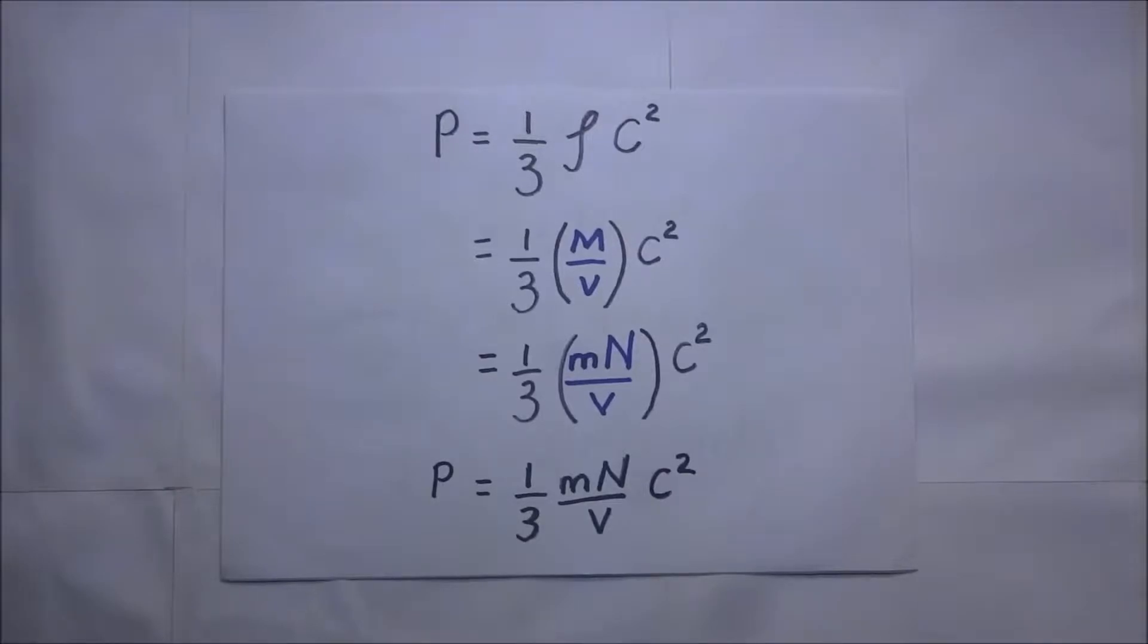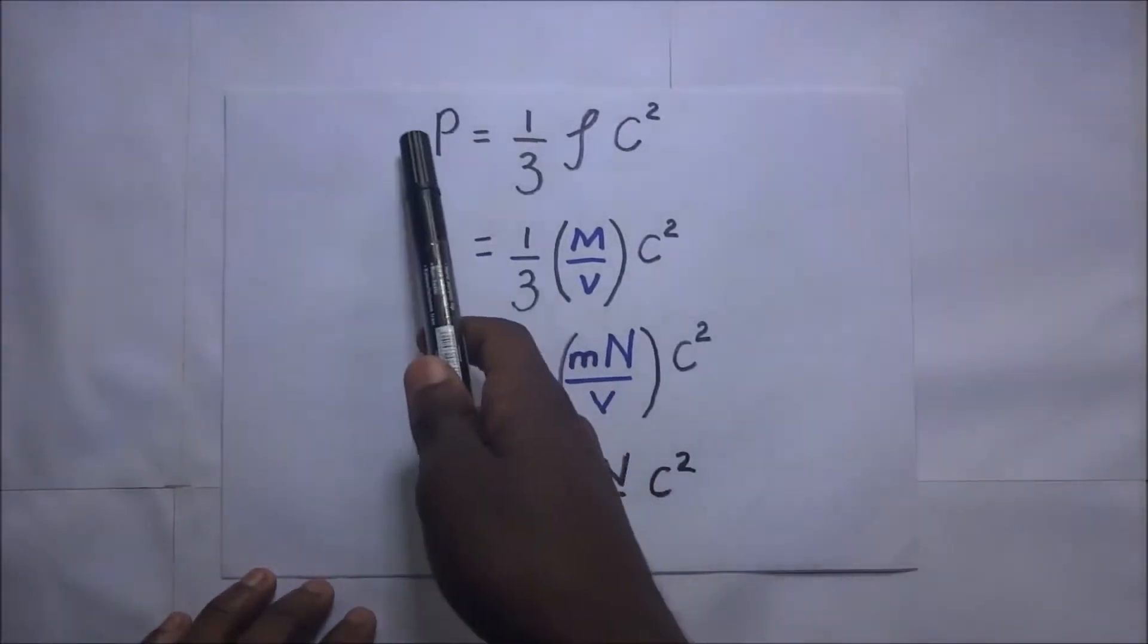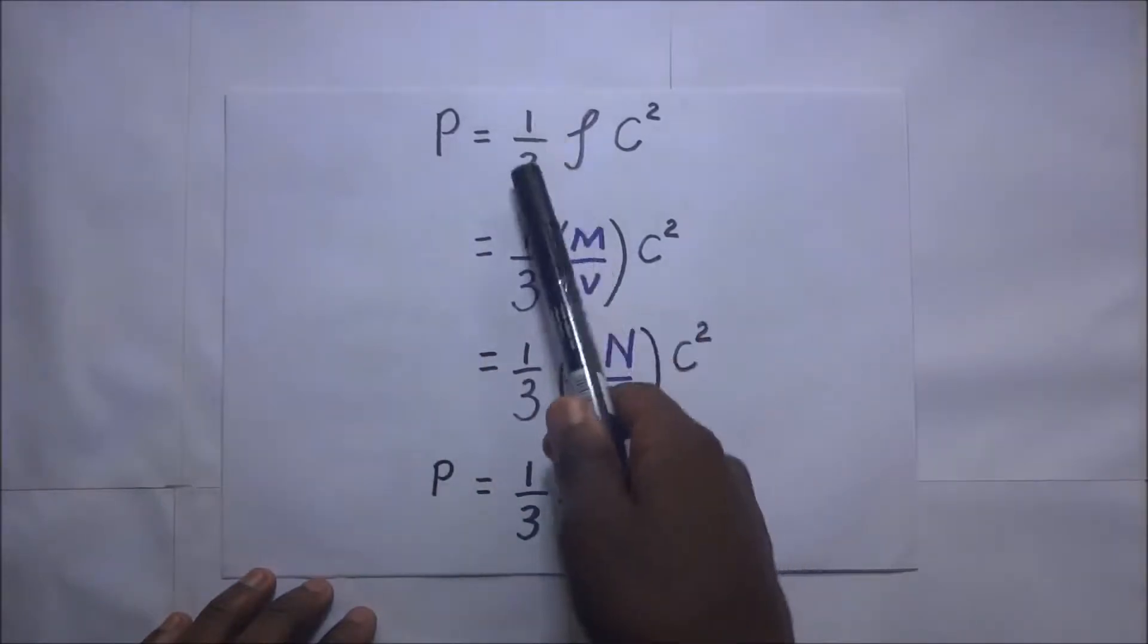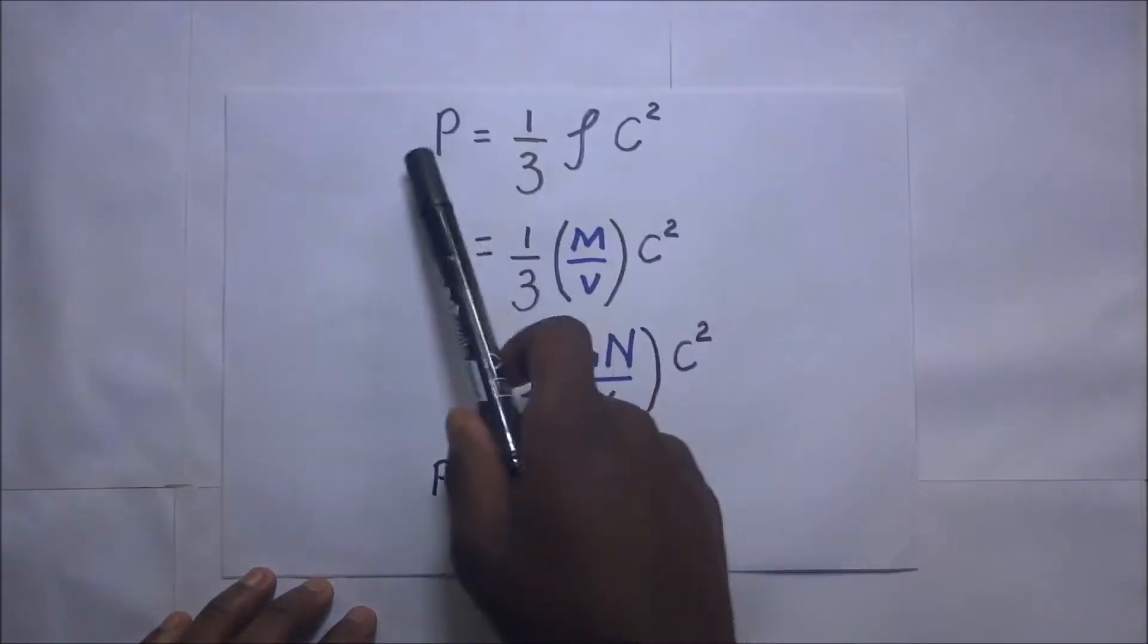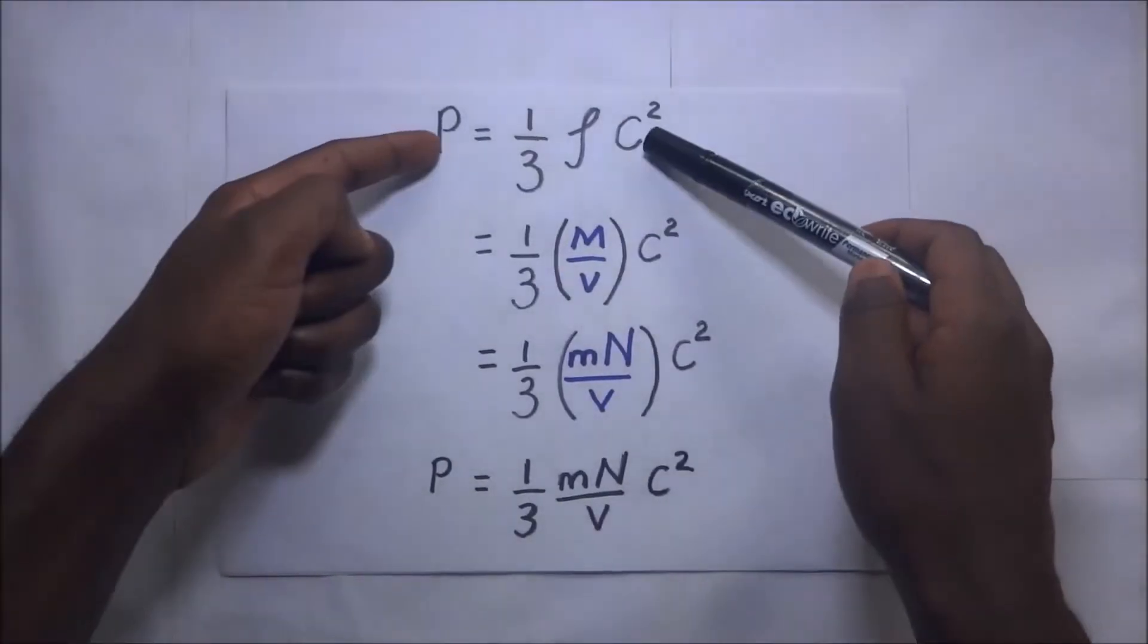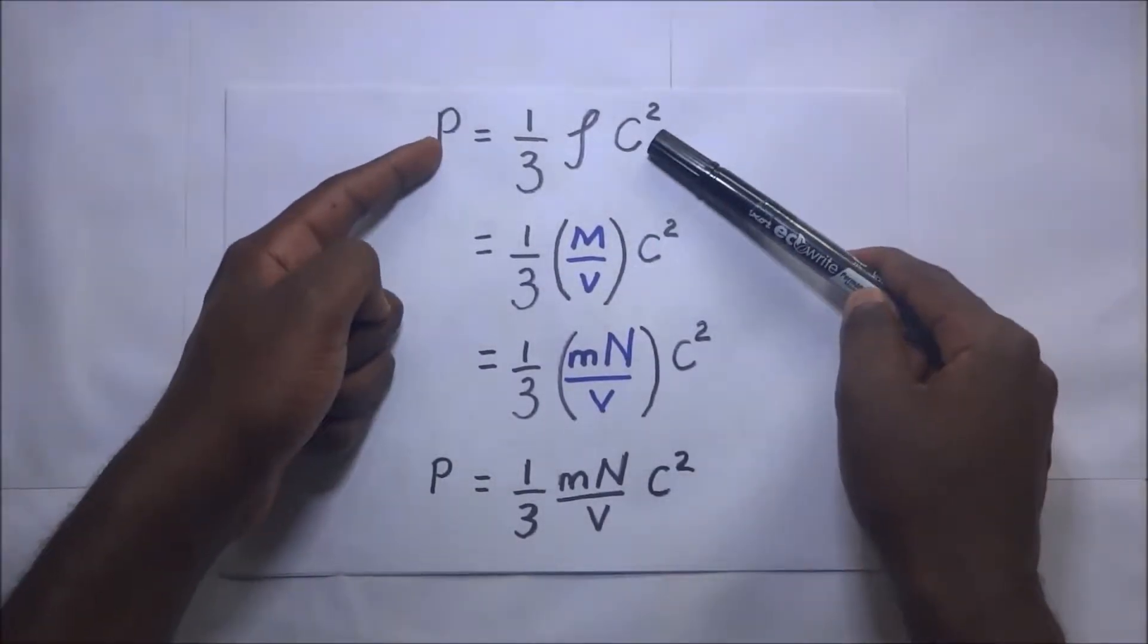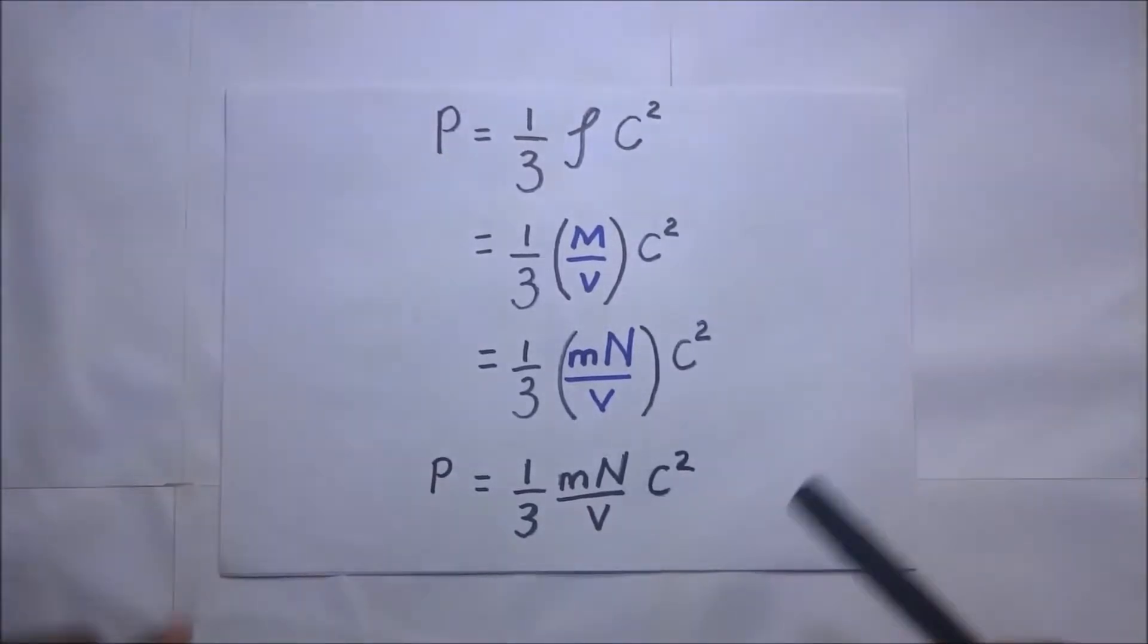We'll begin straight away with the expression of kinetic pressure of an ideal gas. The expression is P, which is pressure, equal to one-third times the density times the velocity squared. This is the expression. Now we want to start from this expression of kinetic pressure and derive Boyle's law.